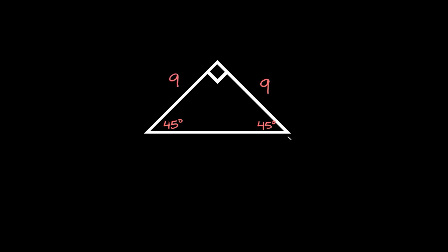The hypotenuse on a 45-45-90 is just the length of a leg times root two. So here the length of this hypotenuse would be nine times the square root of two.